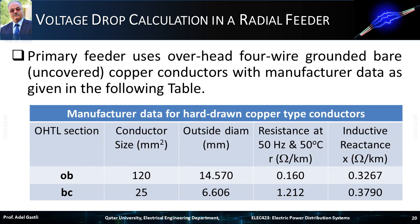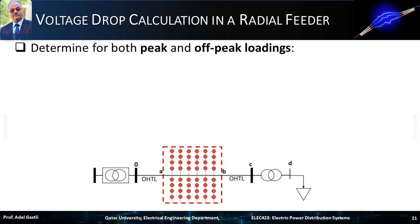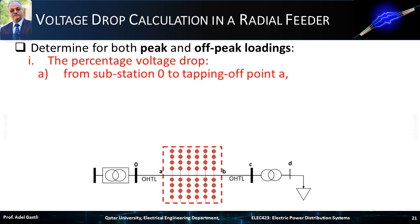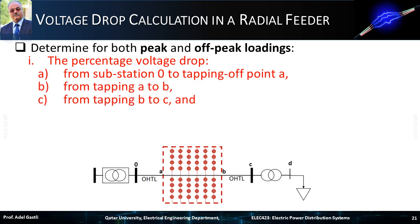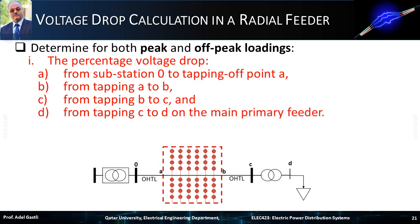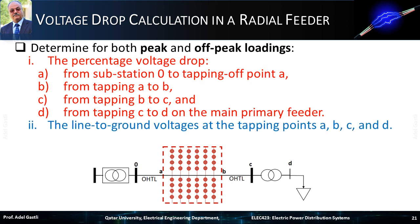The primary feeder uses overhead 4-wire grounded bare, that means uncovered, copper conductors, with manufacturer data as given in this table. We want to determine for both peak and off-peak loadings: the percentage voltage drop from substation point O to tapping-off point A; from tapping point A to point B; from tapping point B to C; and from tapping point C to D on the main primary feeder. Then, determine the line-to-ground voltages at the tapping points A, B, C, and D. Consider that we have a 0.9 power factor.